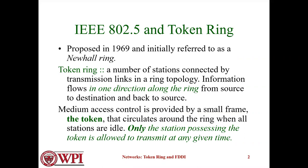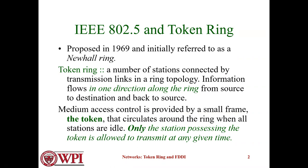Token Ring is a number of stations connected by transmission links in a ring topology, and information flows in one direction along the ring from source to destination and back to source. The medium access control is provided by a small frame called a token that circulates around the ring when all stations are idle.